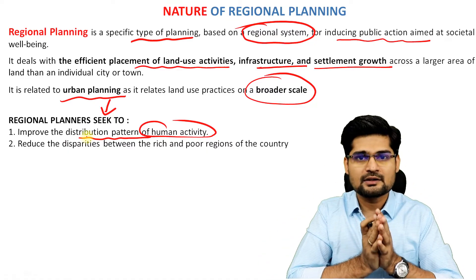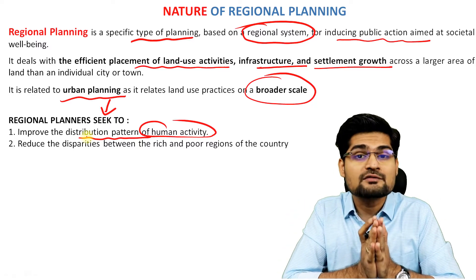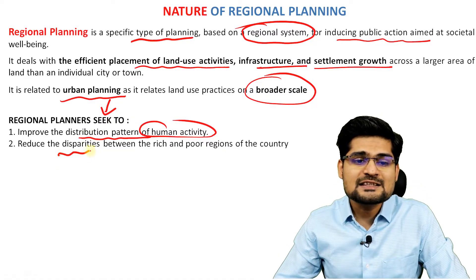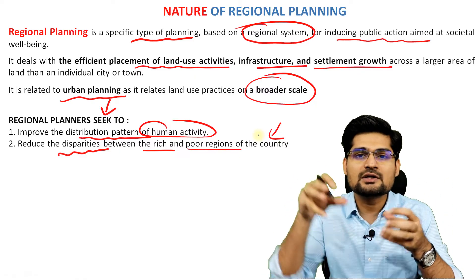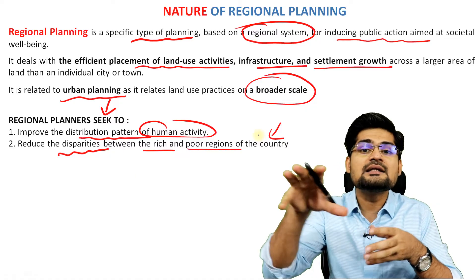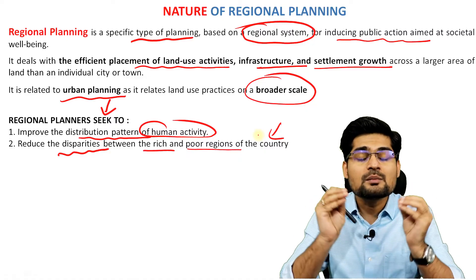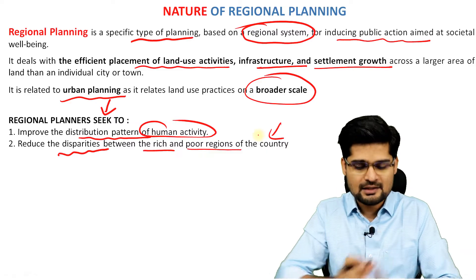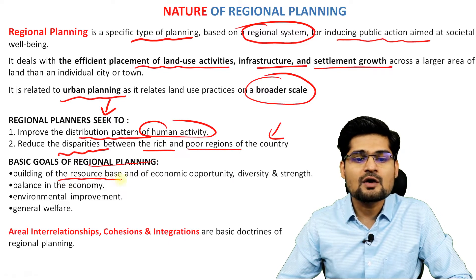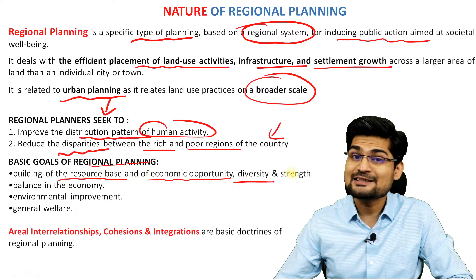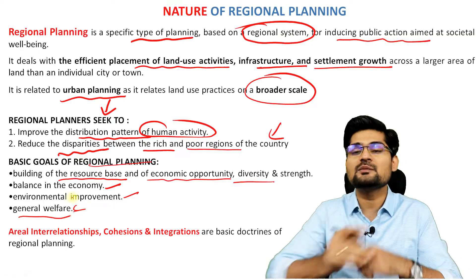Regional planners do two main things: first, improve the distribution pattern of human activity, because equitable distribution is very important for well-being; and second, reduce disparities between rich and poor regions, since resources are concentrated in particular areas. The goals of regional planning are to build the resource base for economic opportunity, diversity, economic growth and development, balance the economy, achieve environmental improvement, and promote general welfare and well-being.